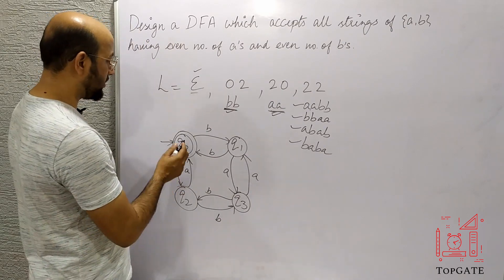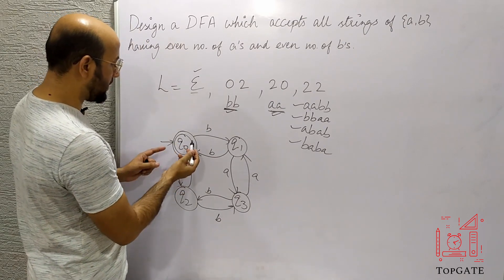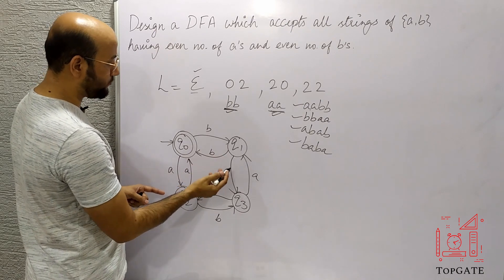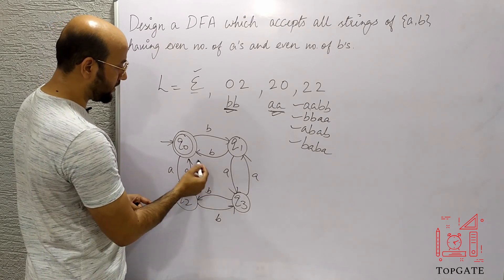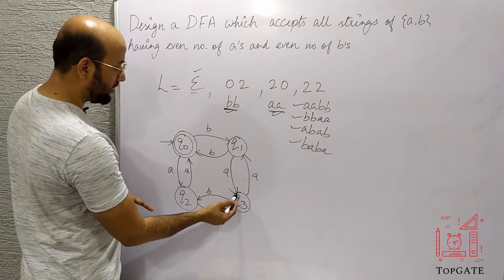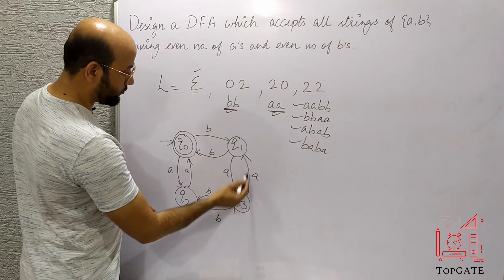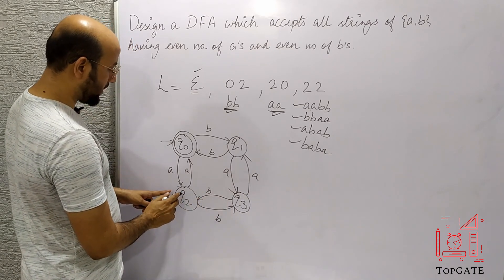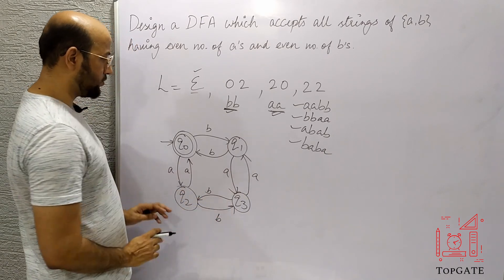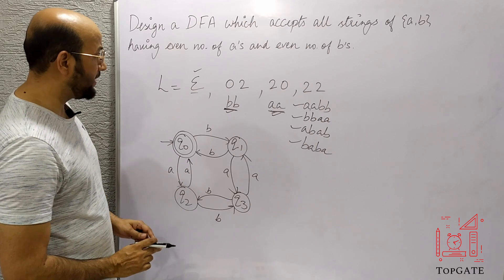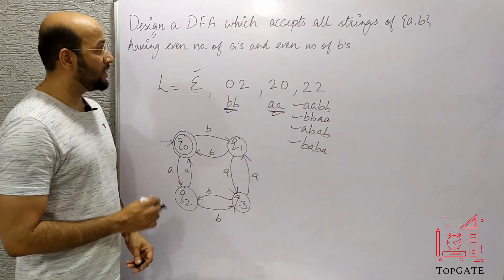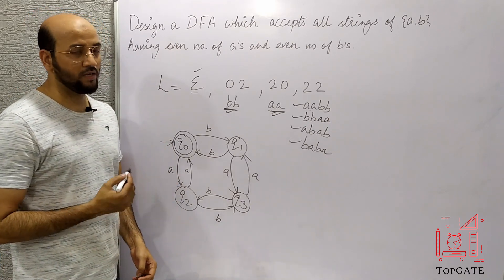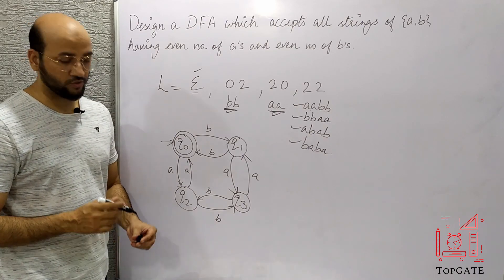This DFA is now complete. At Q0 we have two outgoing transitions: one for B going to Q1, and one for A going to Q2. At Q1 we have two paths: one for A and one for B. At Q3 we have two paths: one for A and one for B. At Q2 we also have two paths: one for A and one for B. So this DFA is complete — it is a DFA for even number of A's and even number of B's. Thank you so much.